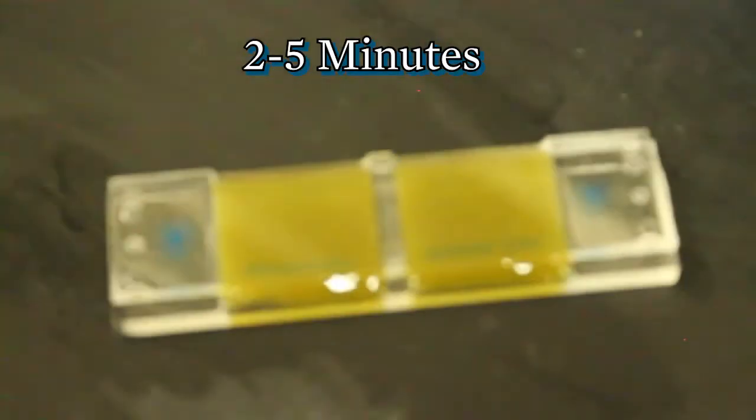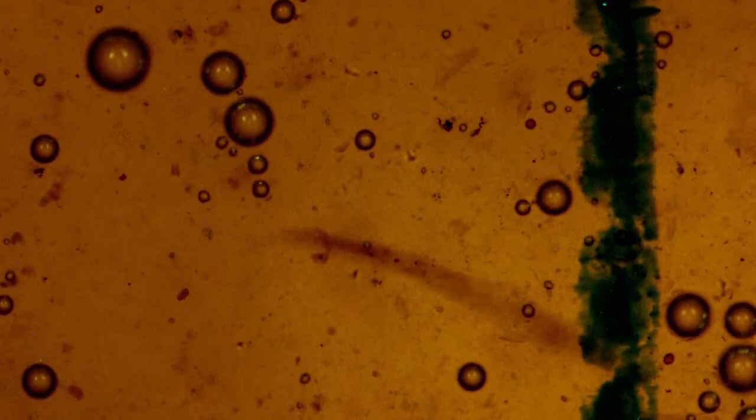We let our slide sit for approximately two to five minutes and it is ready to read under the scope. Once you have placed your slide on a microscope, make sure you're using your 10x objective. Go towards the middle of one of the chambers and find the grid.